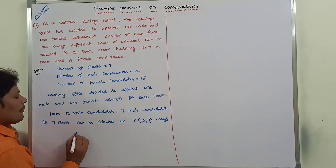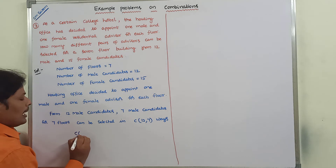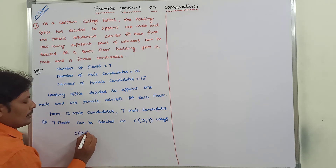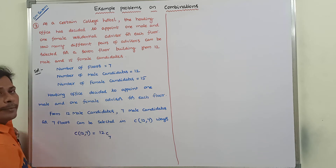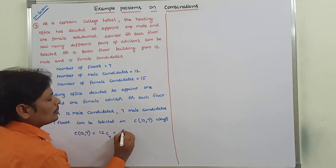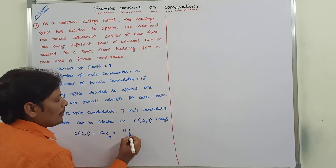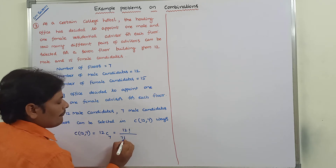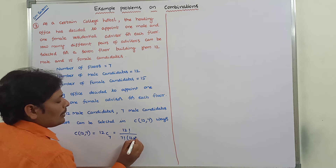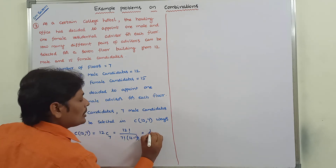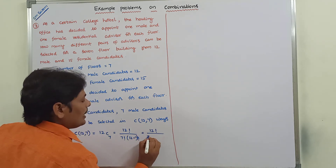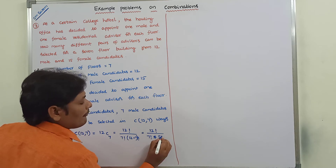C(12, 7) is equal to 12! divided by 7! into (12 − 7)!, which equals 12! divided by 7! into 5!.